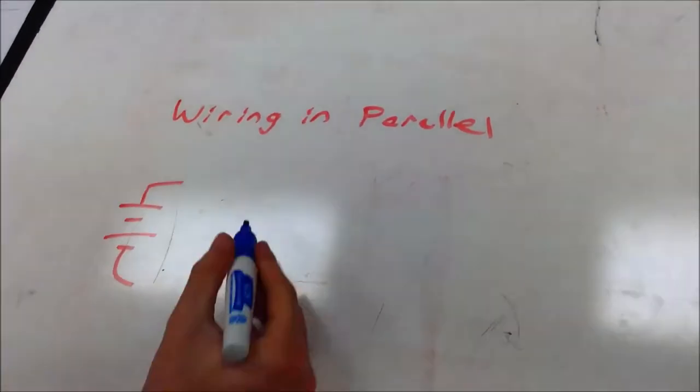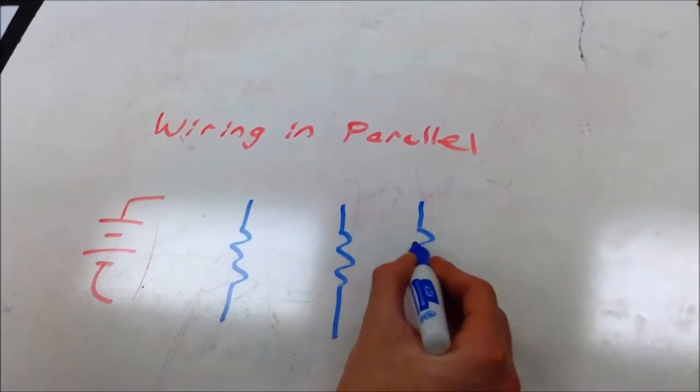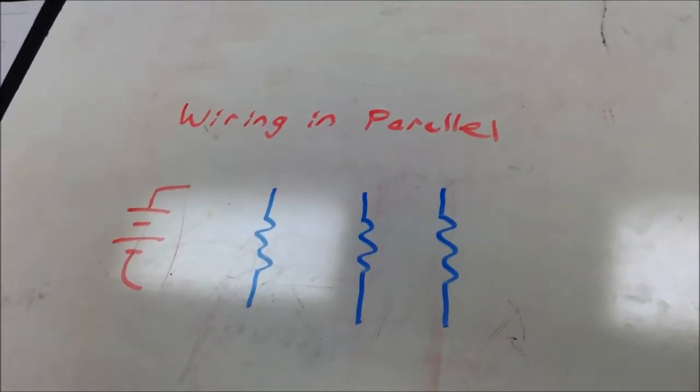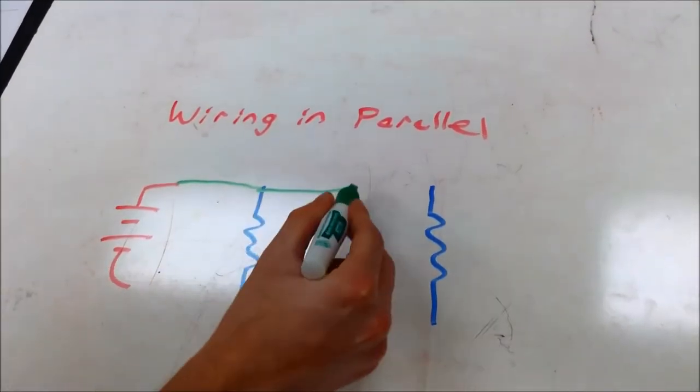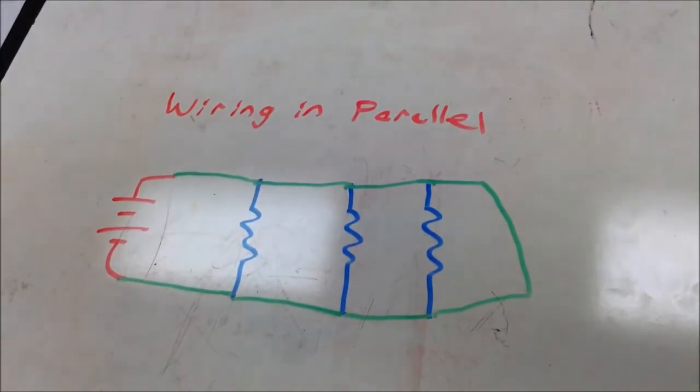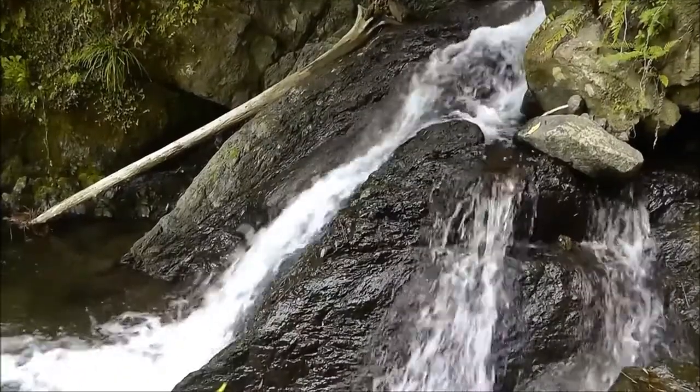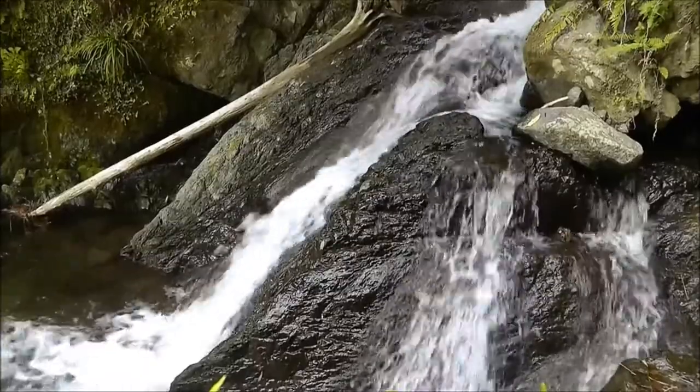The second way to wire a circuit is in parallel. A basic diagram of three resistors in parallel is shown here. An easy way to visualize the current in a parallel circuit is to imagine a river, but this time flowing down a mountain that forks into different paths of varying resistance.